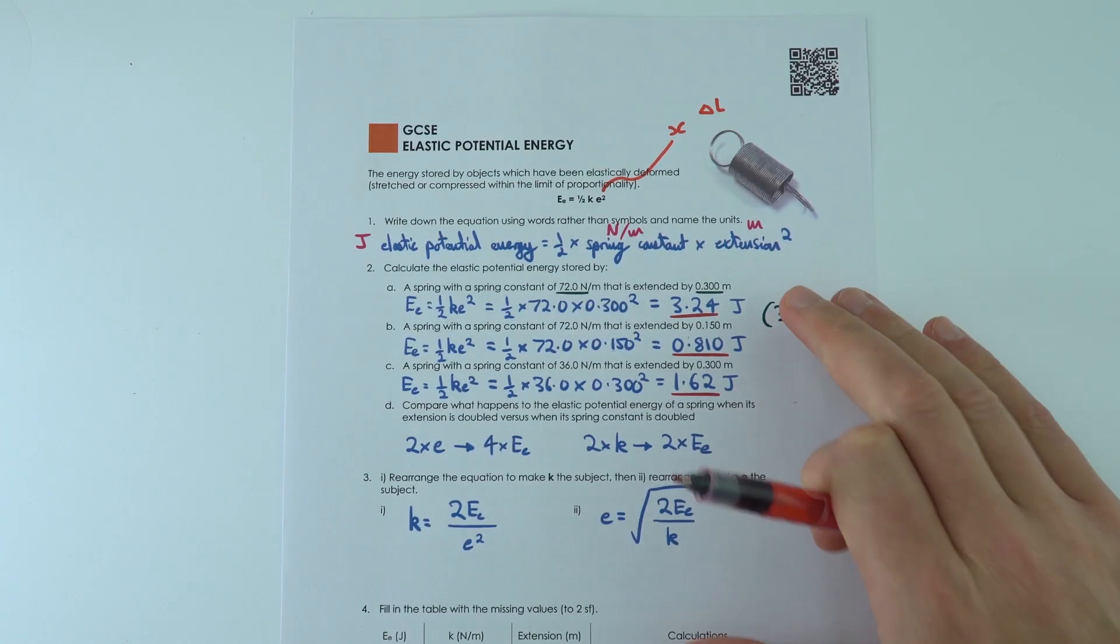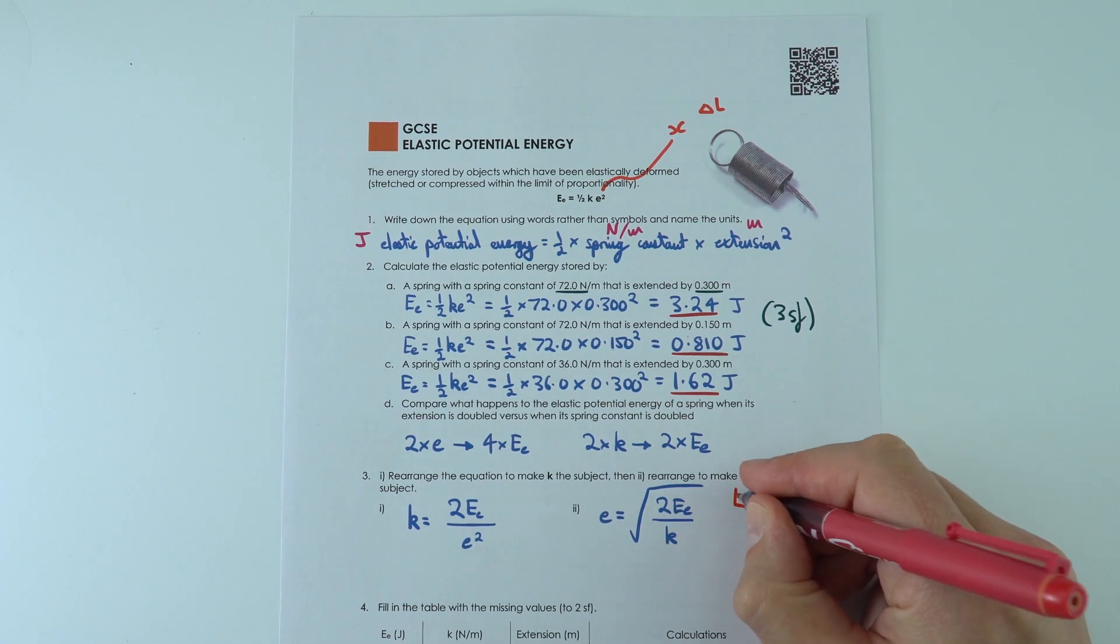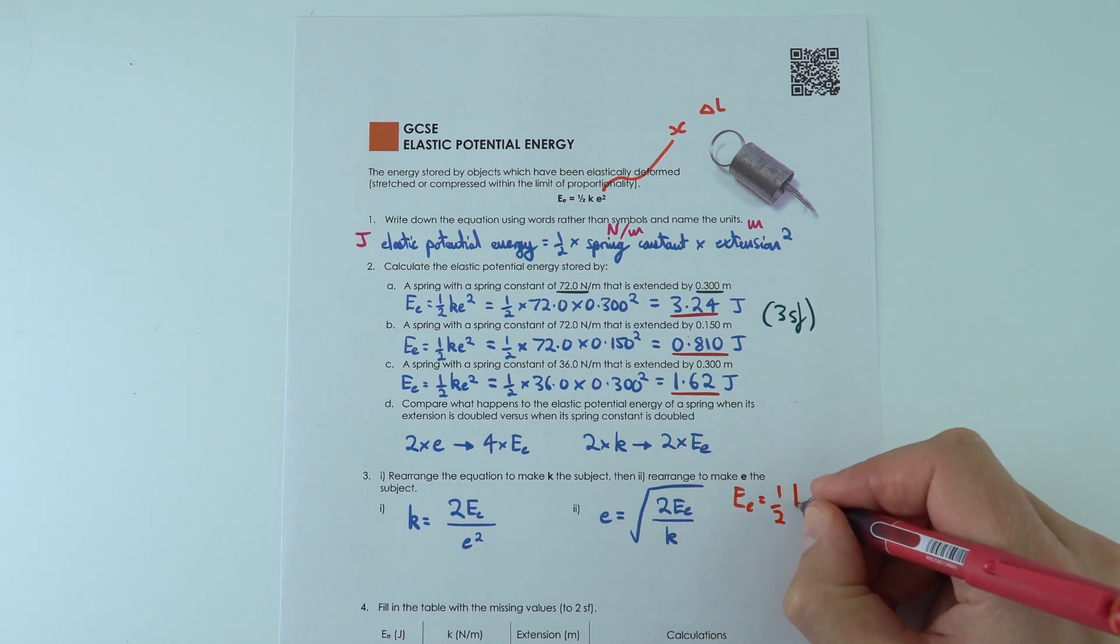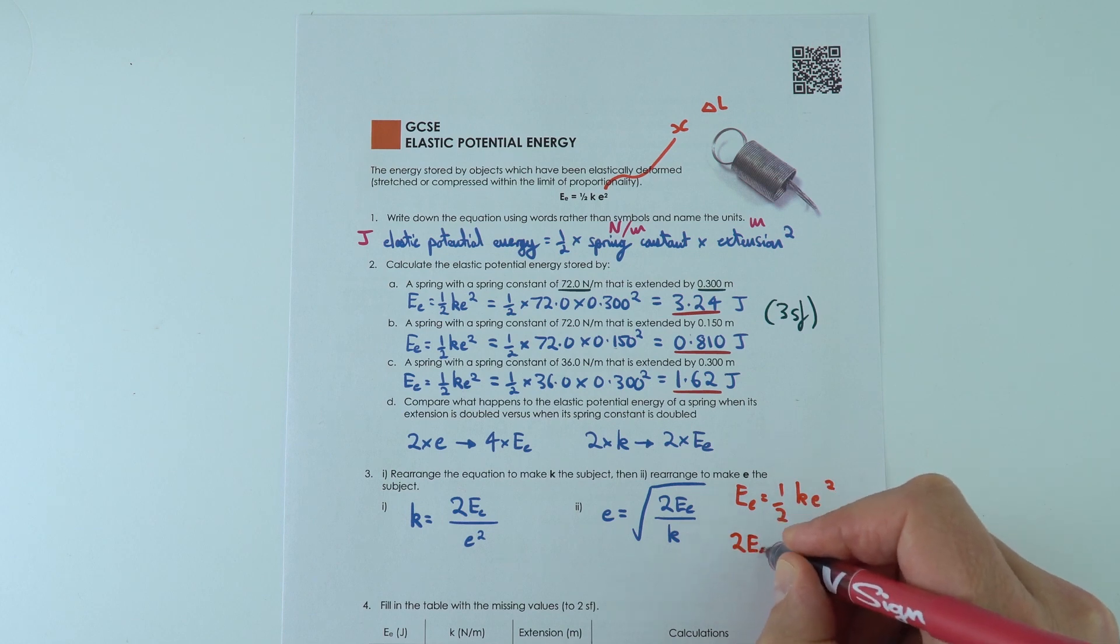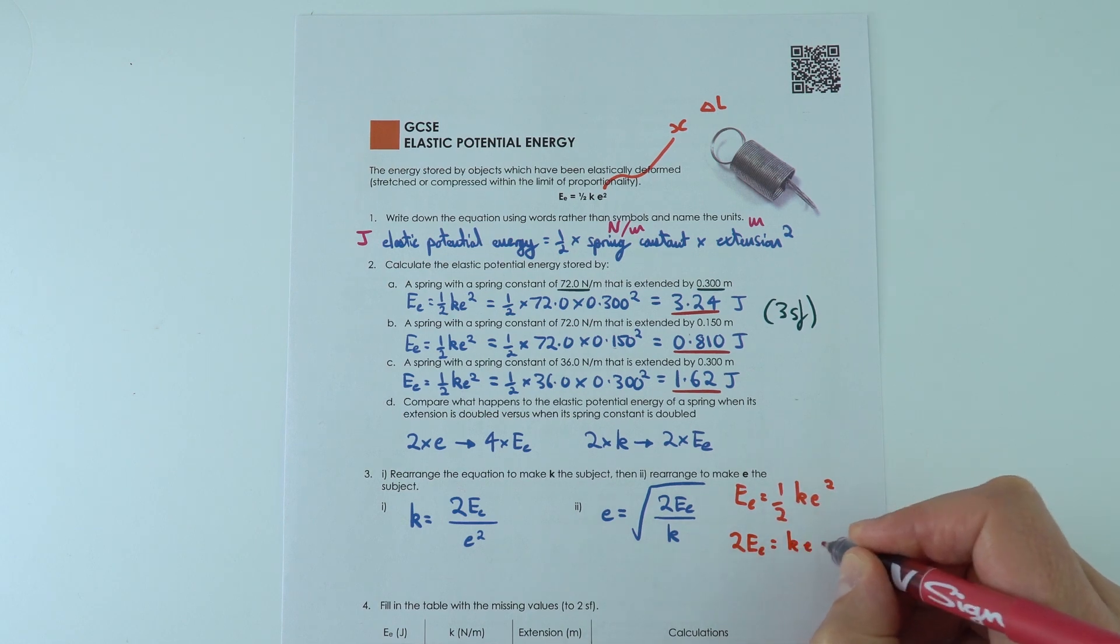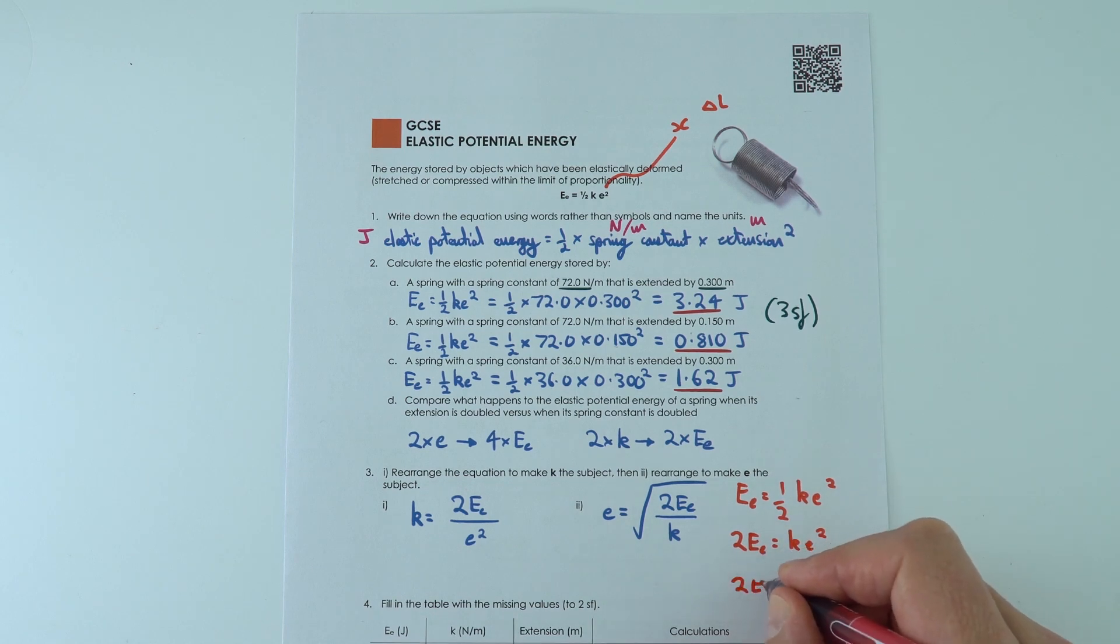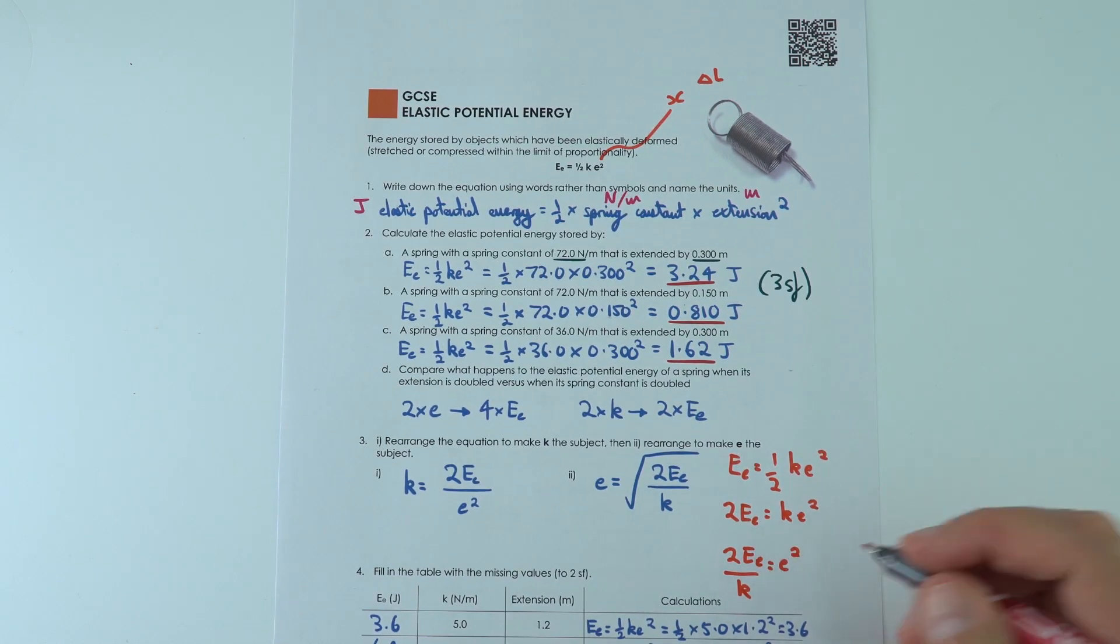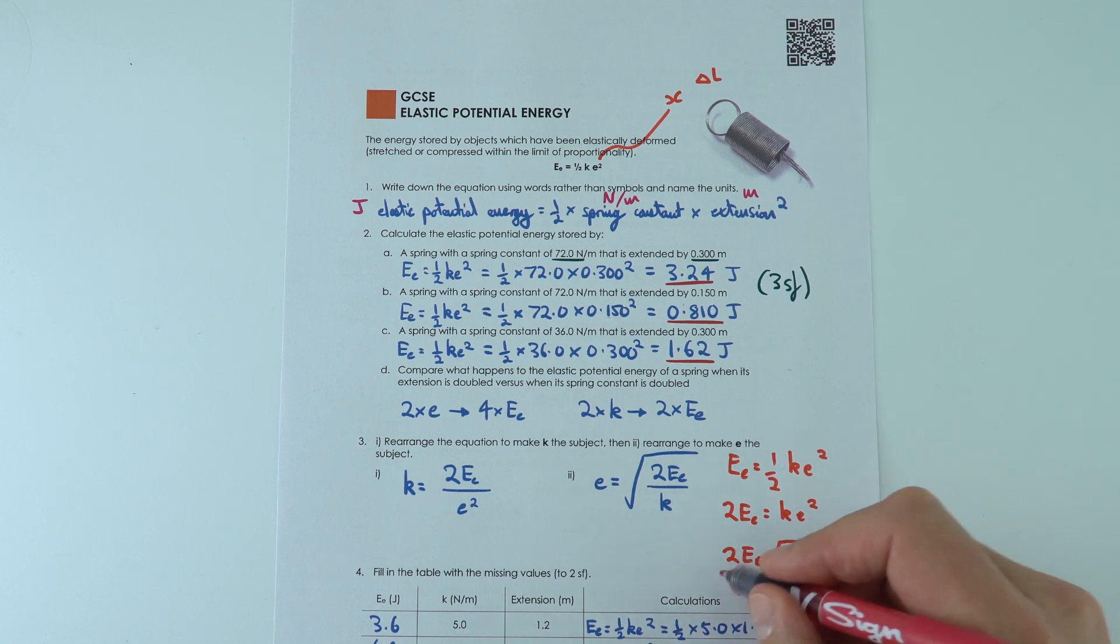Then we've rearranged the equation. This one here gets a little bit more tricky, but effectively let's say this is our E_e equals a half k e squared. I'm going to double both sides to make 2E_e equals k e squared. I'm going to divide both sides by k, so 2E_e over k is equal to e squared.